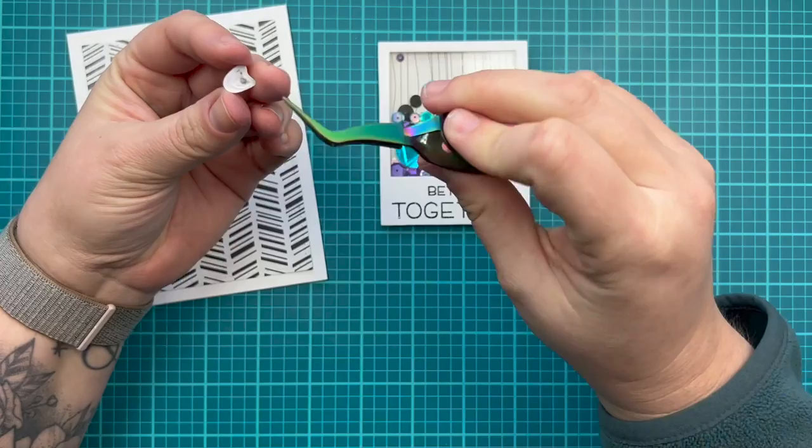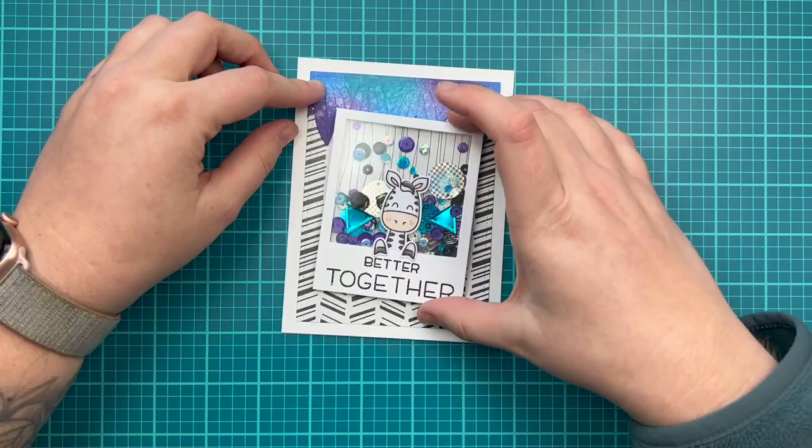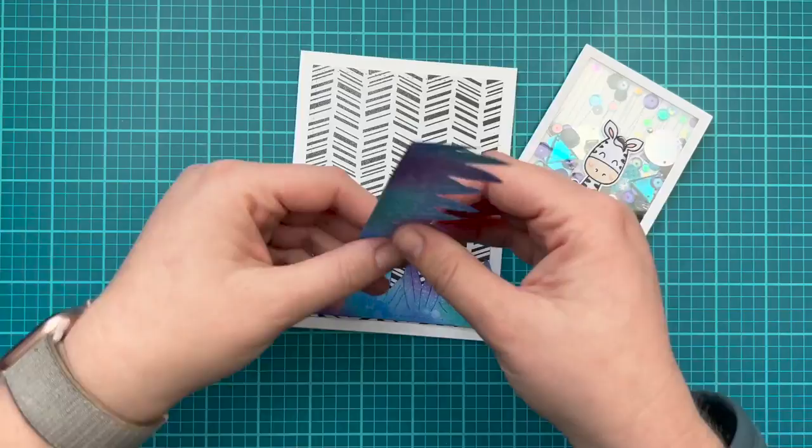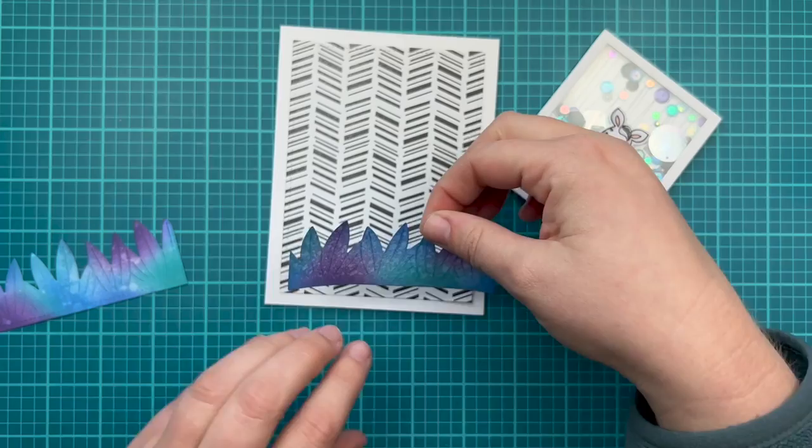Once I get both of those hooves glued down, I'm going to work on how I'm going to lay out my Polaroid shaker with my leaves. I wanted my leaves to show, but I knew that putting them both overlapping the Polaroid would hide the sentiment. So I am going to just overlap the leaves on the top part of my Polaroid. I took the one that had a little more splatter than I would like to be glued directly to my card base, and that will be on the bottom because my Polaroid will overlap that one the most.